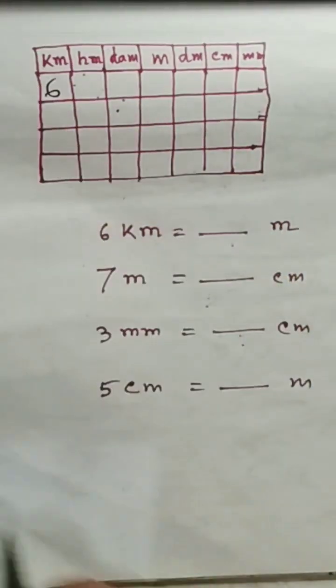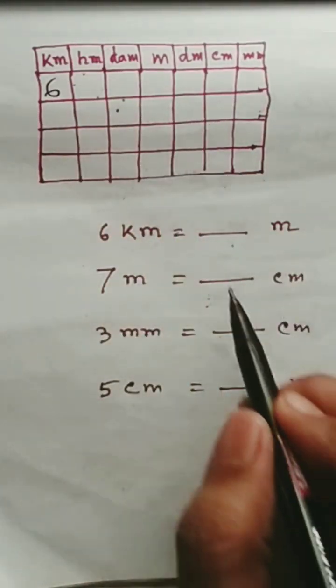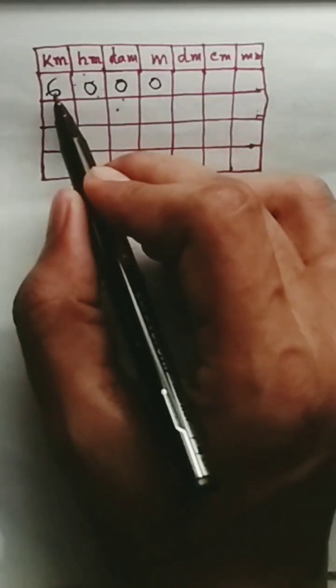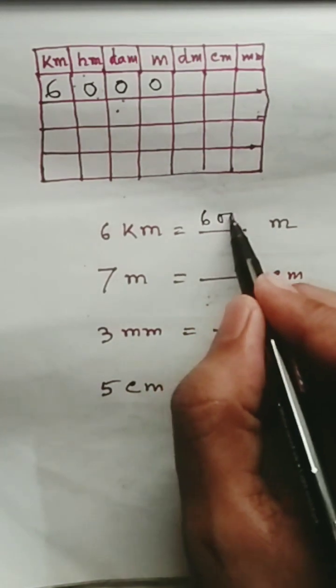How is it here? 6 kilometers. And then you have to find meter. Write up to meter: zero, zero, zero. It is six, zero, zero, zero - six thousand meters. Okay, complete.